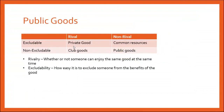A public good is a particular type of good in economics. We have been primarily talking about private goods so far in this class. What we're going to talk about is the other end of that extreme — public goods. Generally speaking, all economic goods fall into one of four categories.